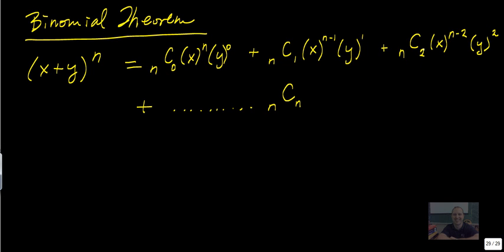So whatever n is, it's going to keep going up. It's going to be n choose n. And this first term is going to be to the power of 0. And then y is going to be to the power of n. That's where we're going to end up to.